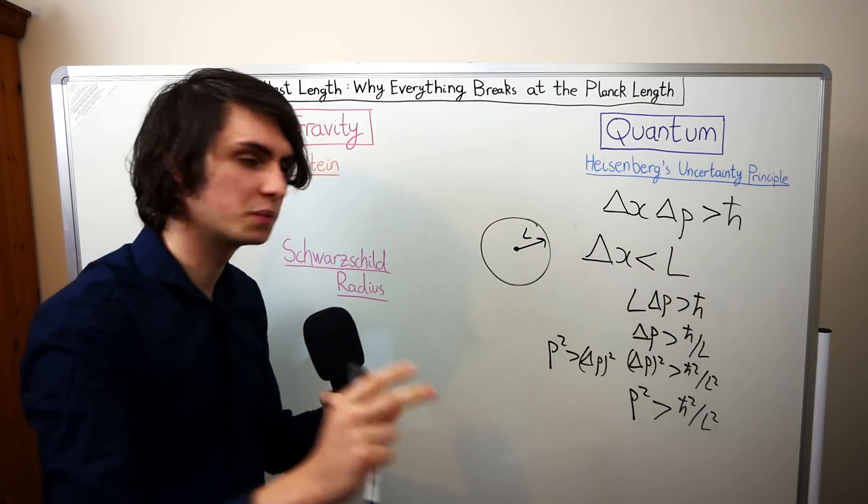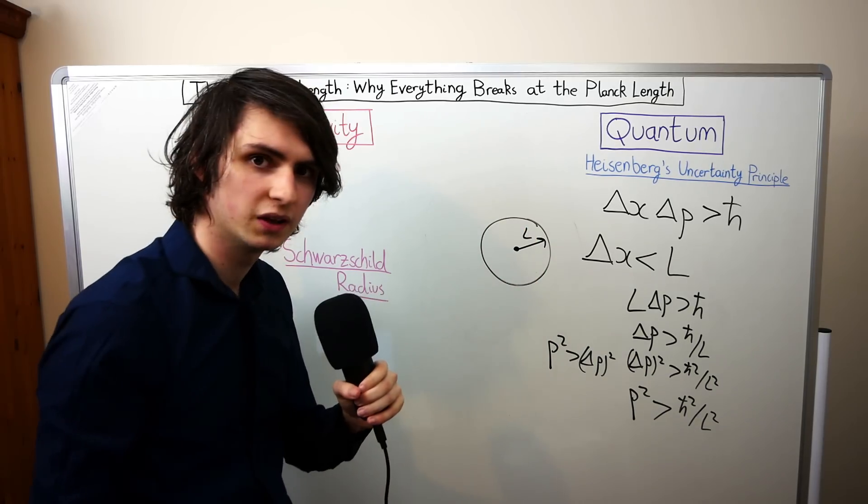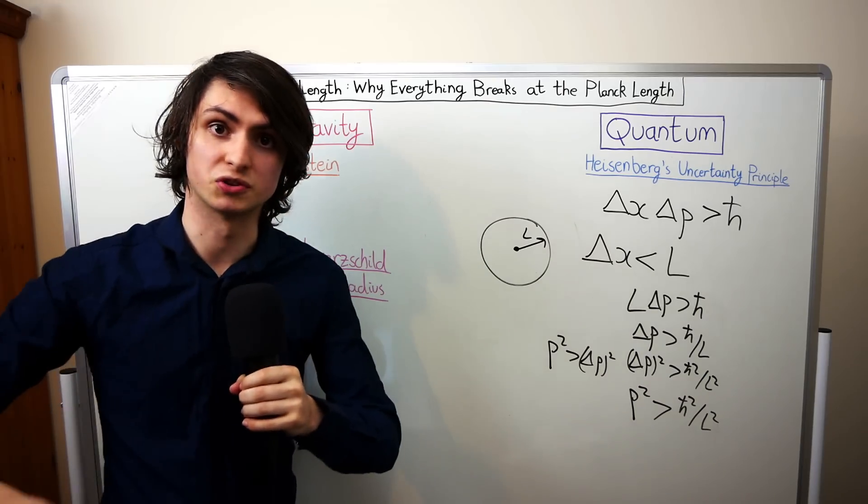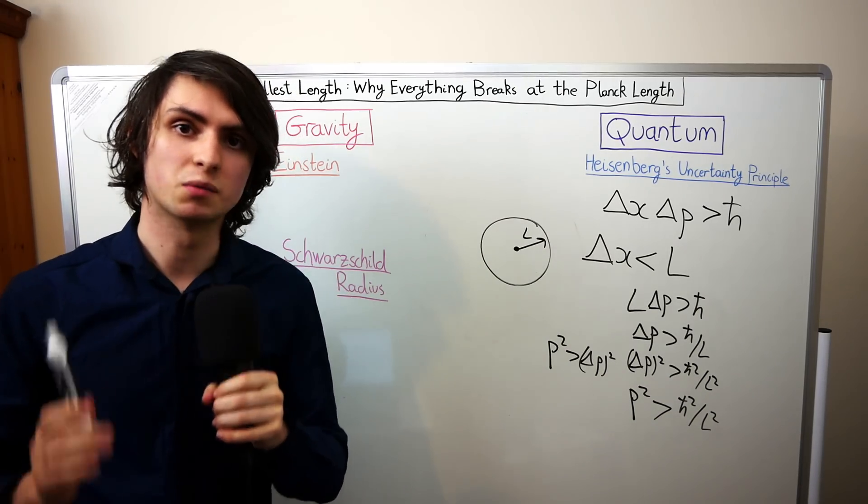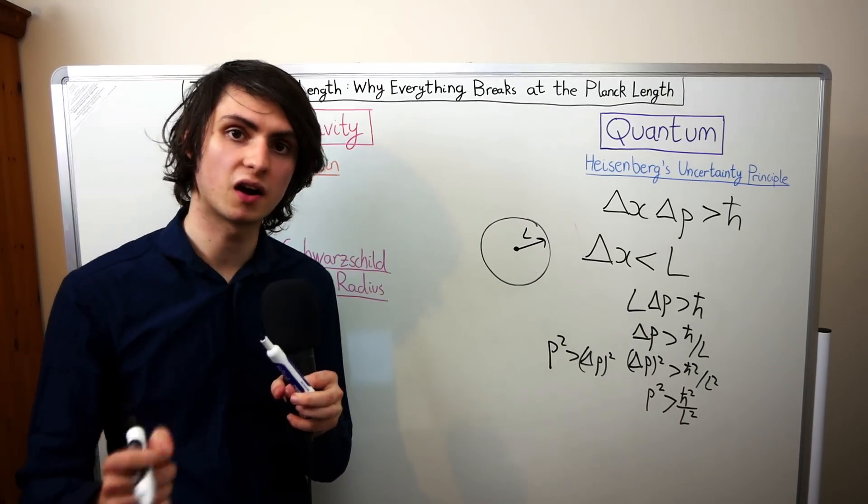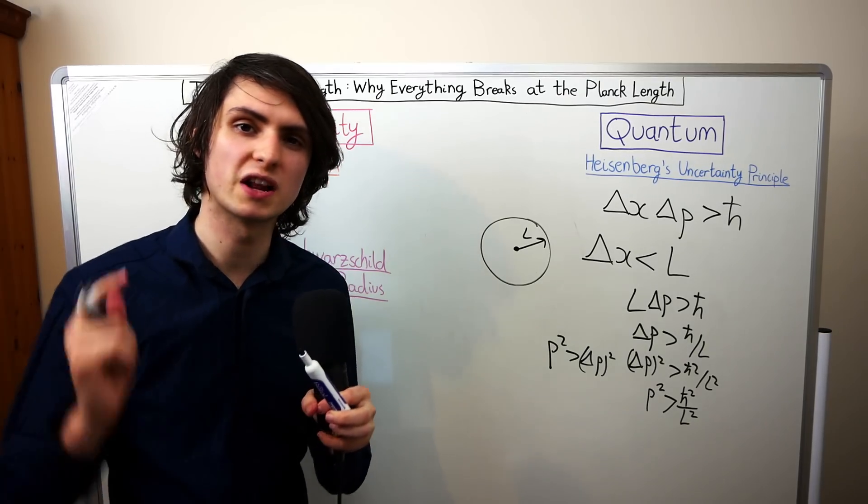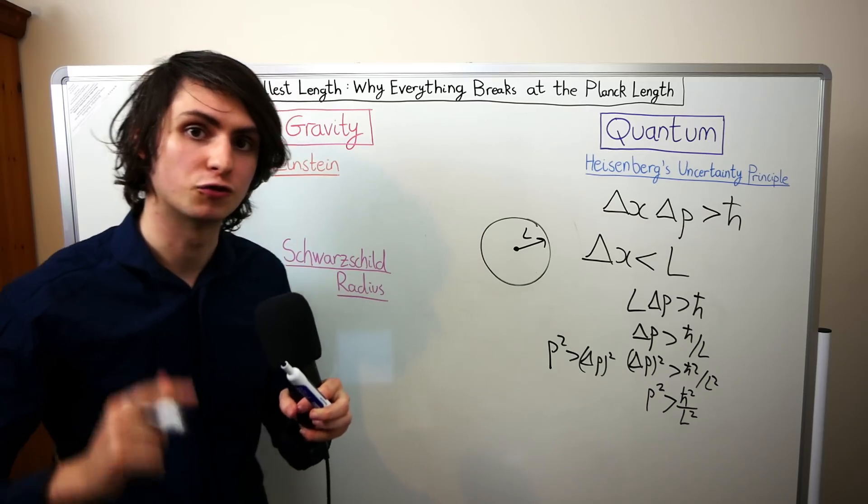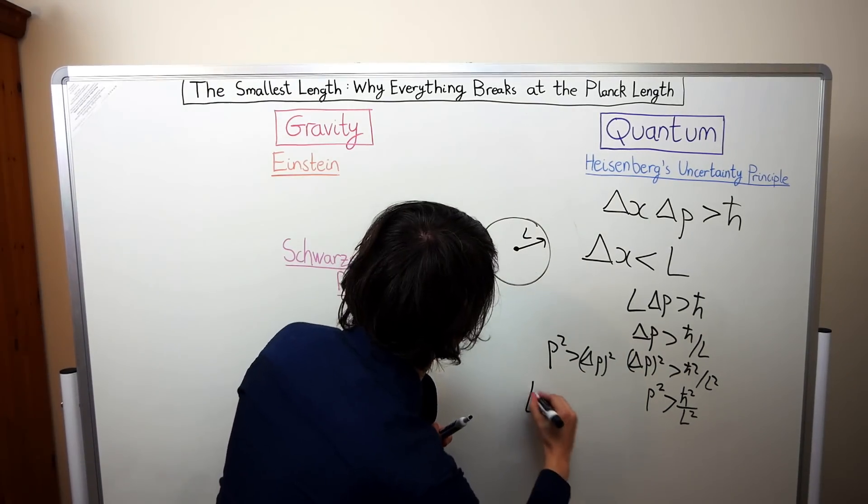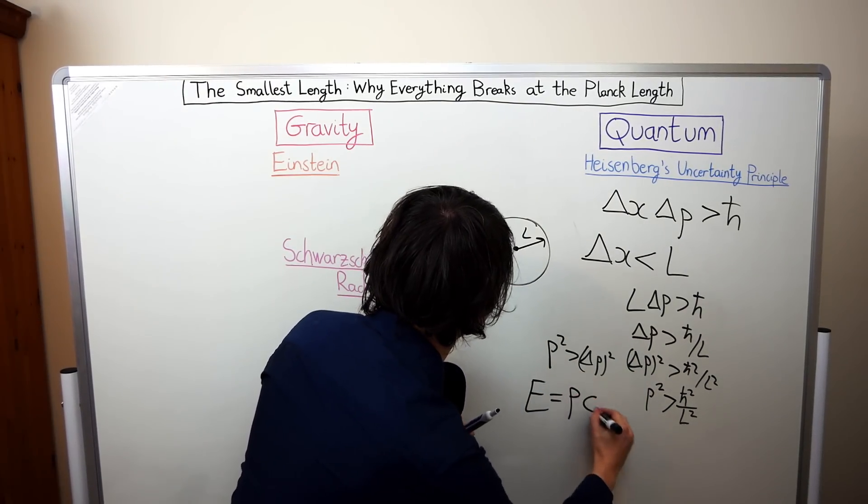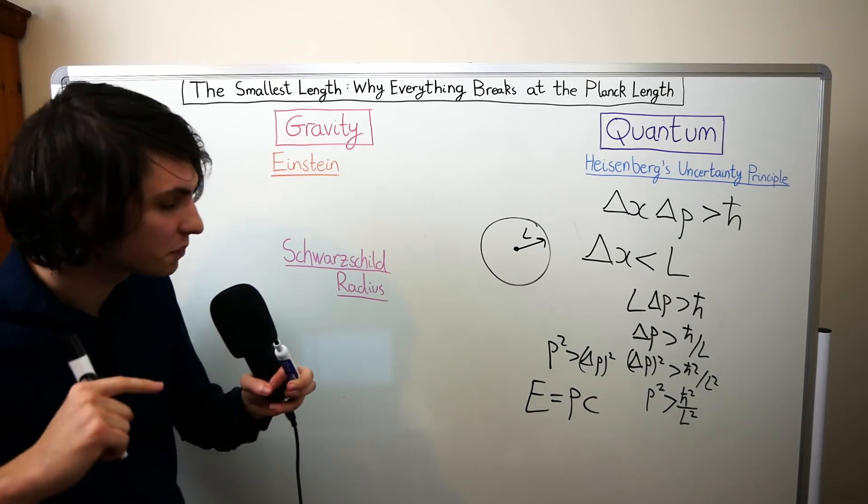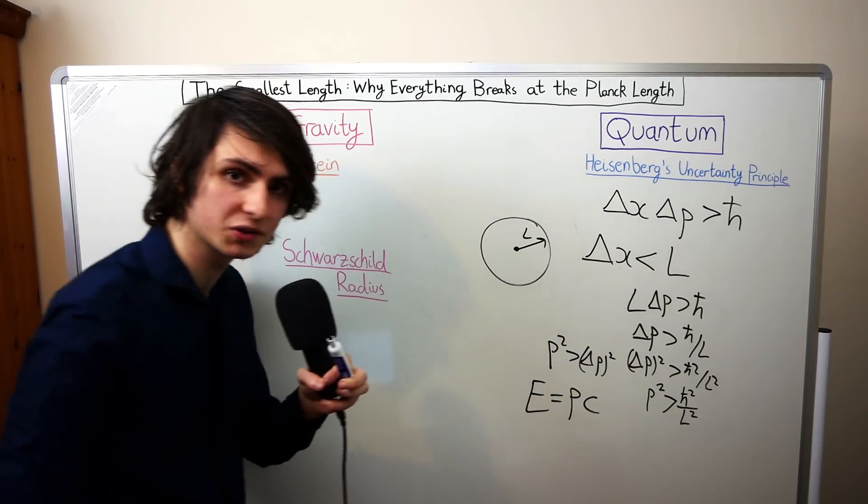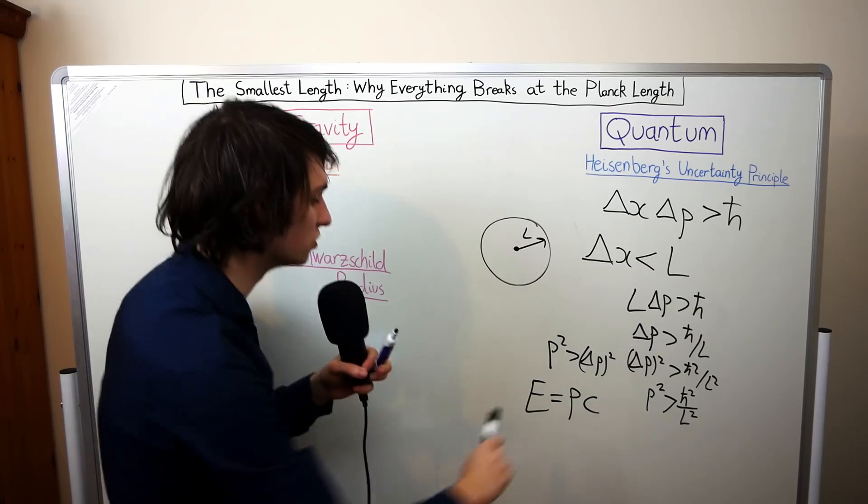We now have that if we want to probe some very small distance L it's going to involve very high momentum p. The smaller the distances we want to do physics on the higher the momentum's involved are going to be. Now if our particle has a high enough momentum then it will become relativistic. All this means for our purposes is that we can use a very simple formula for its energy and that is energy is momentum times the speed of light. So if we're trying to probe small enough length scales then the momentum is going to become very high. Our particle becomes relativistic and we can use this formula.